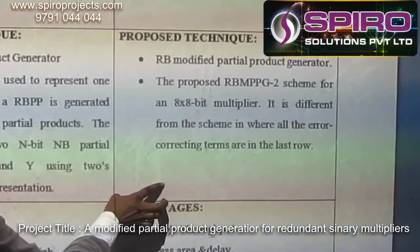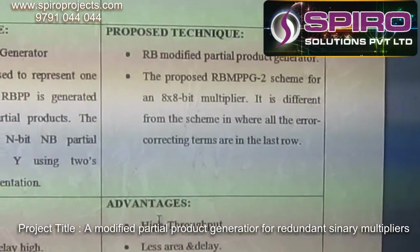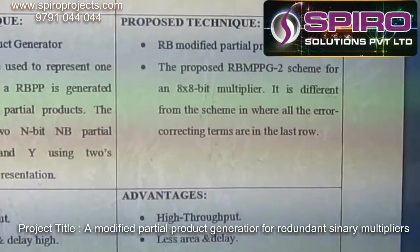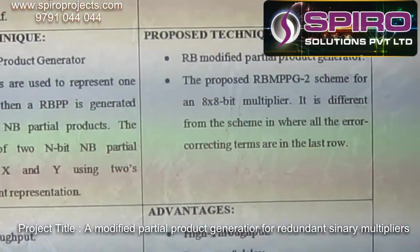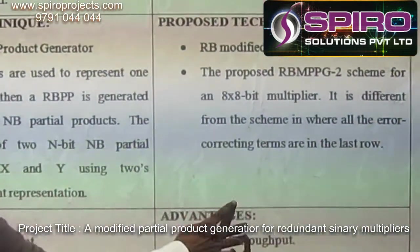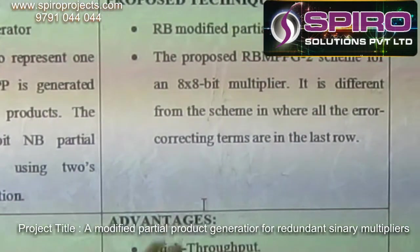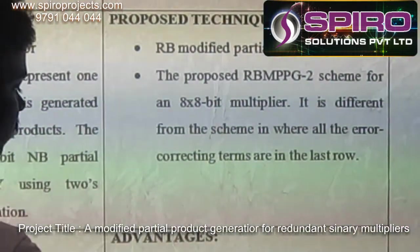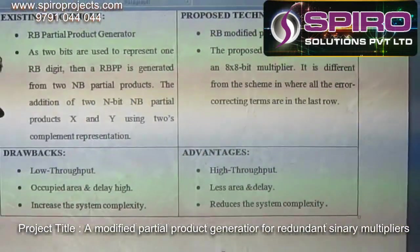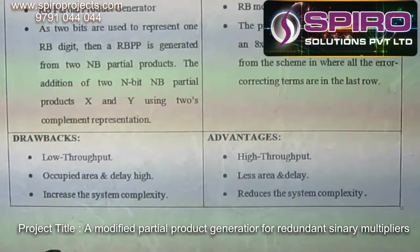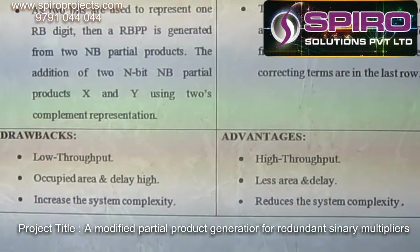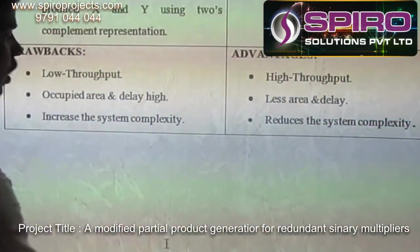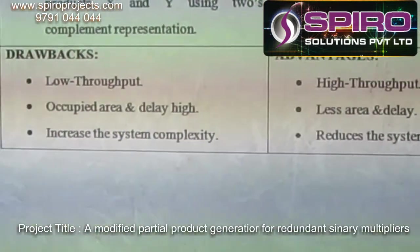In this proposed system, for an 8-bit multiplier, we get only 4 partial products. Hence, the area and the delay can be reduced due to this modified Booth encoding system.